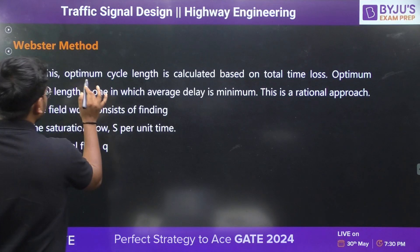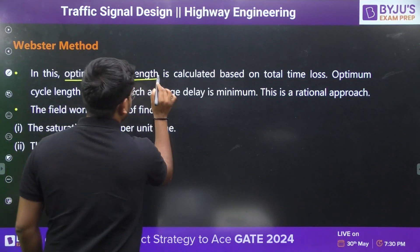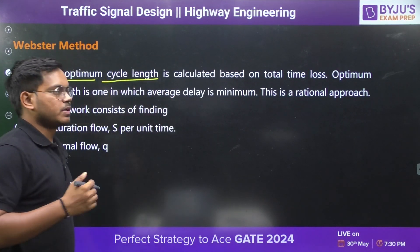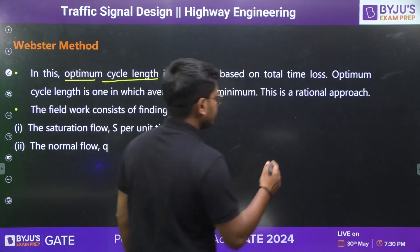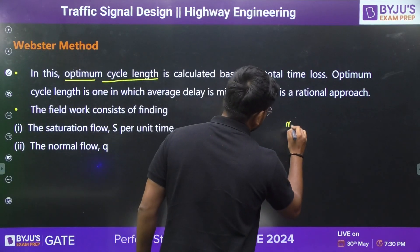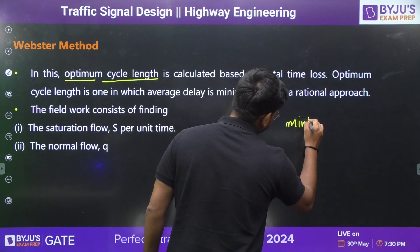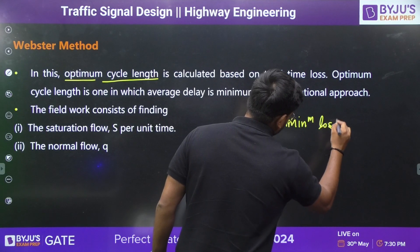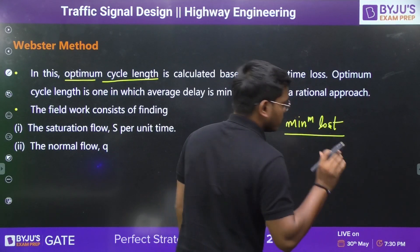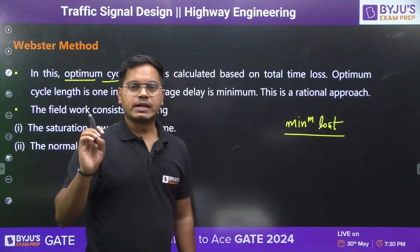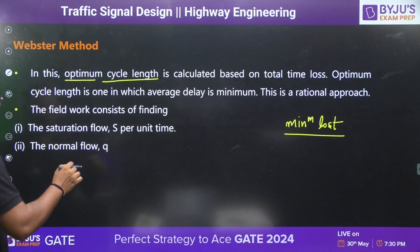From the Webster method, we get the optimum cycle length. When I say optimum cycle length, what does that mean? That basically means minimum loss of time. And here, we will be having saturation flow and normal flow.